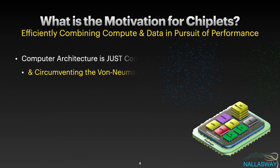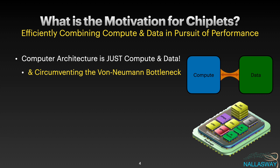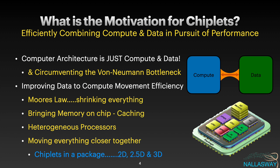Let's take a closer look at the chiplets. Fundamentally, computing is all about compute and data, and many of our innovations over the years have been about circumventing the volume and bottleneck in the pursuit of performance as well as efficiency. When we look at the history, we see that Moore's Law was shrinking transistors for decades very successfully — so much so that the volume and bottleneck became a problem, and we started to pull memory onto the chip in the form of caching.